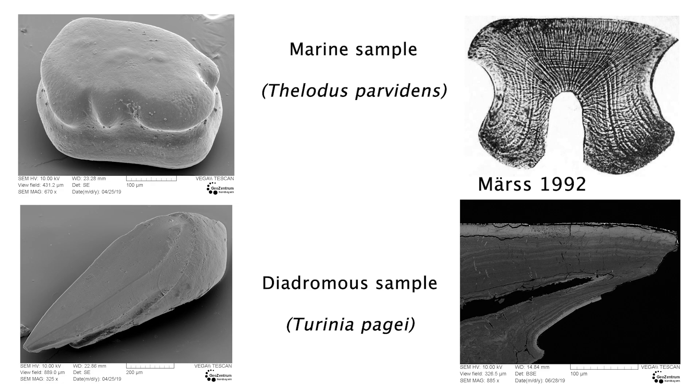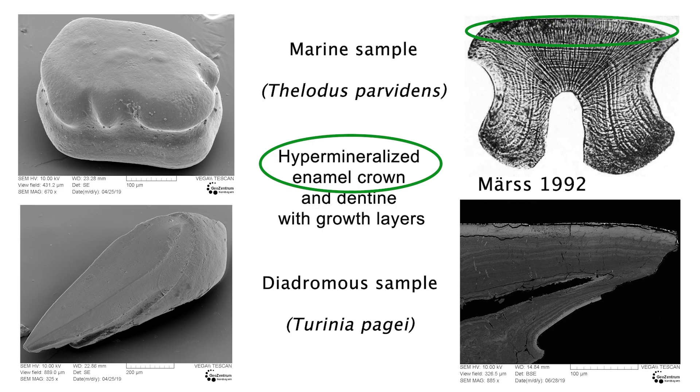The scales consist of two types of tissue, enamel and dentine. The enamel crown is a thin, hypermineralized layer of tissue covering the scales. It forms during the earliest life stage of the thelodont.